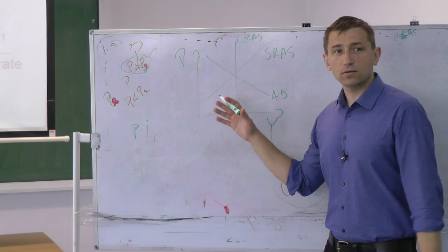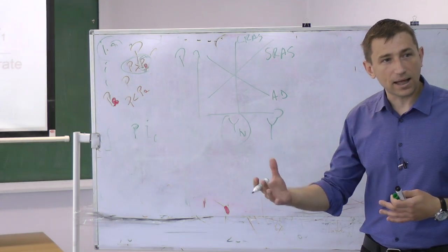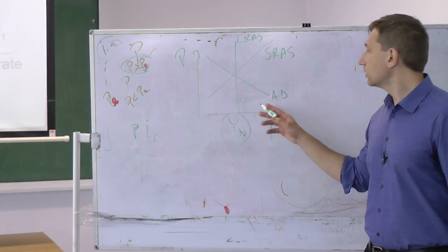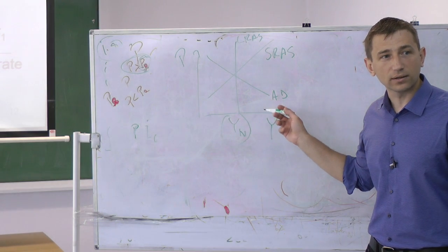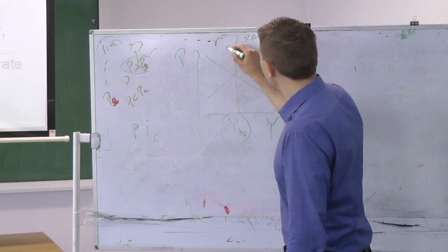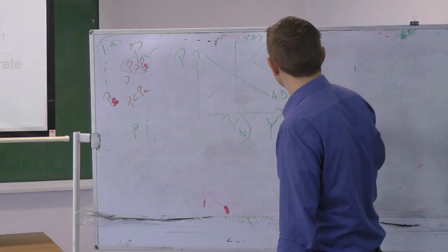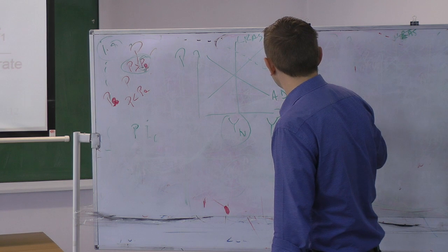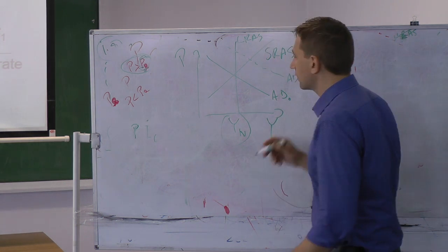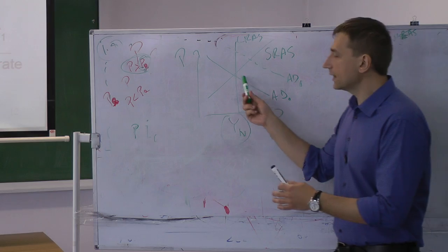Now, the Fed will increase the money supply, which will lower the interest rate, which will shift what? The aggregate demand will be shifted to the right. Aggregate demand is going here, AD to AD1.